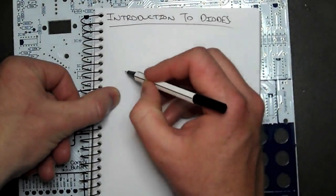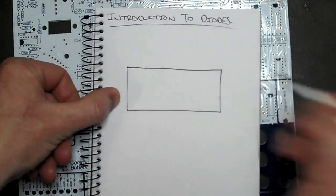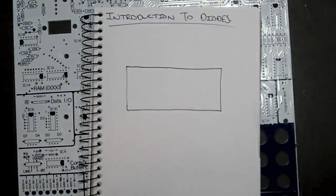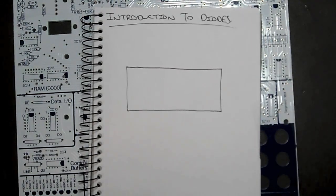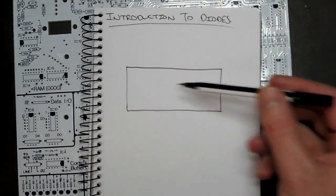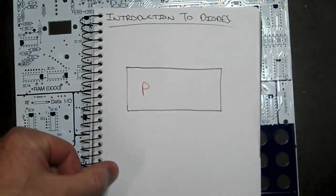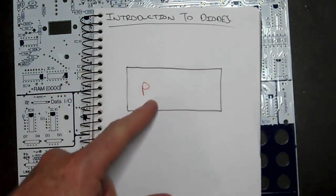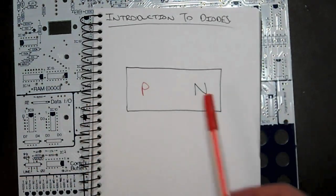We start with a single block of semiconductor material. These days it's quite common that we use silicon — it's both very cheap and very readily available. We then dope it with impurities to produce what's known as our P-N junction. One side is doped to give us P-type and the other side is doped to give us N-type.